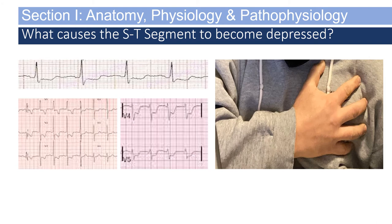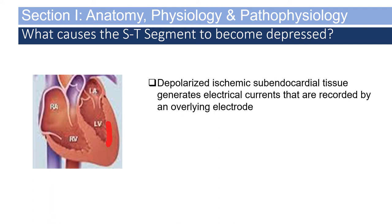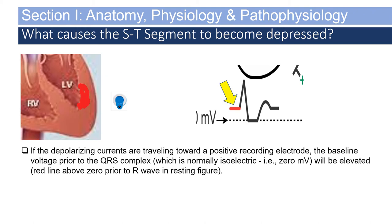EMS providers should always ask why. What causes the ST segment to become depressed? Normal depolarization occurs from the subendocardial tissue and works outward. Depolarized ischemic subendocardial tissue generates electrical currents recorded by an overlying electrode, such as leads V1 through V6. The ischemic section does not go all the way through the ventricular region, as it would in a STEMI. If depolarizing currents travel toward a positive recording electrode, the baseline voltage prior to the QRS — normally isoelectric at zero millivolts — will be elevated, delineated by the red line above zero prior to the R wave.